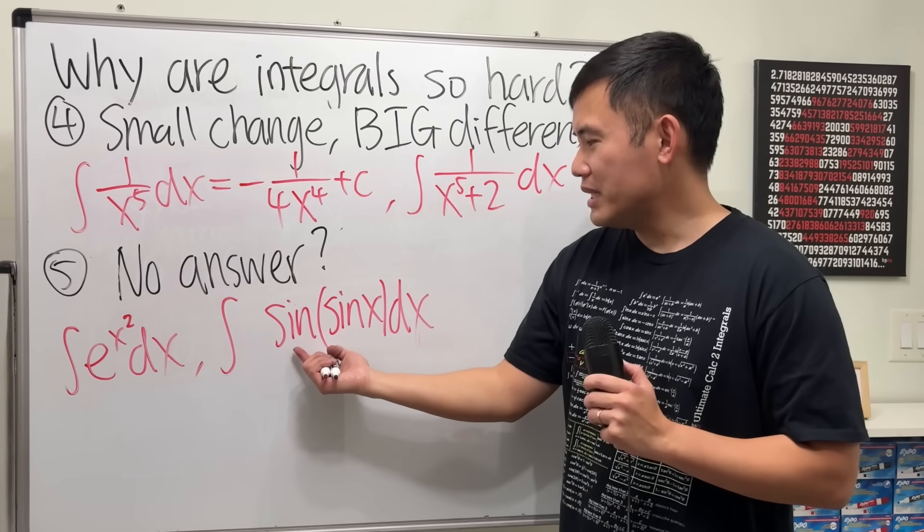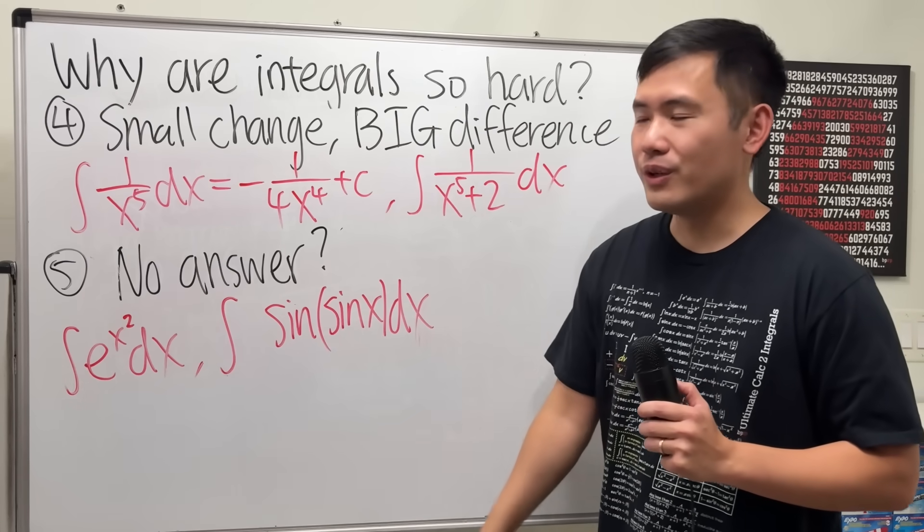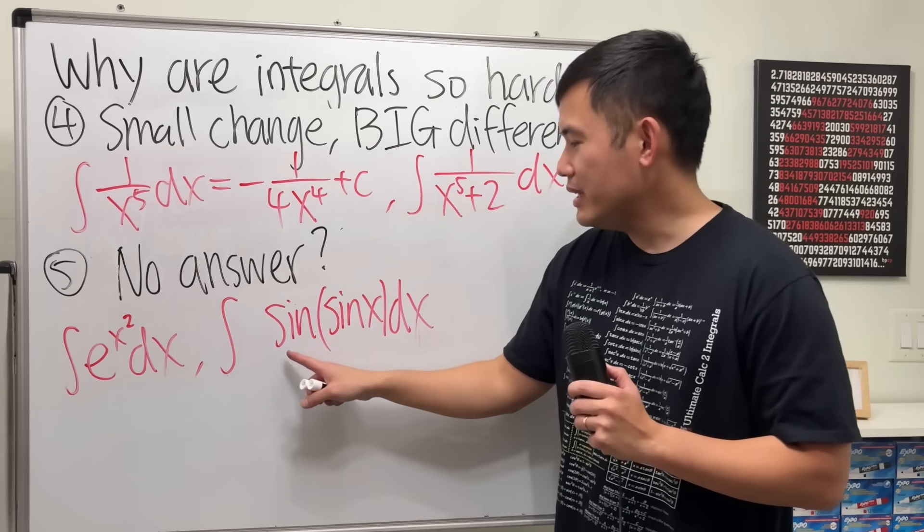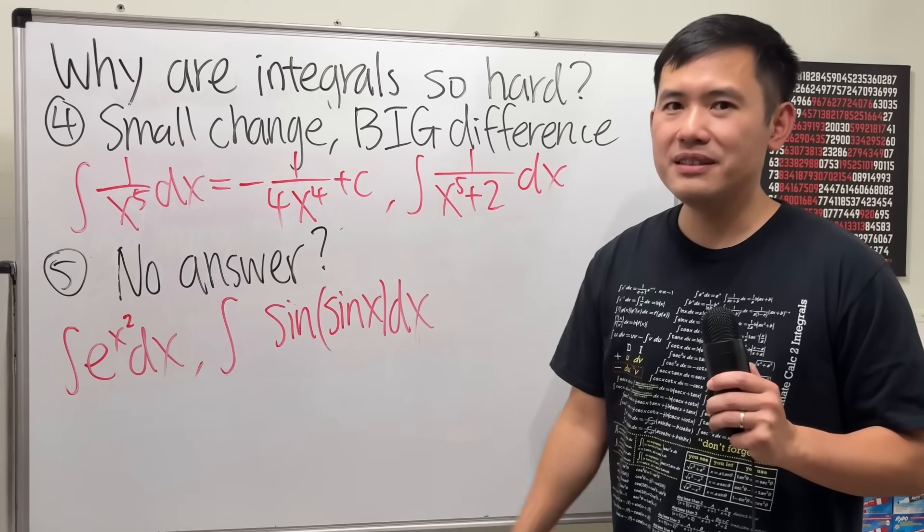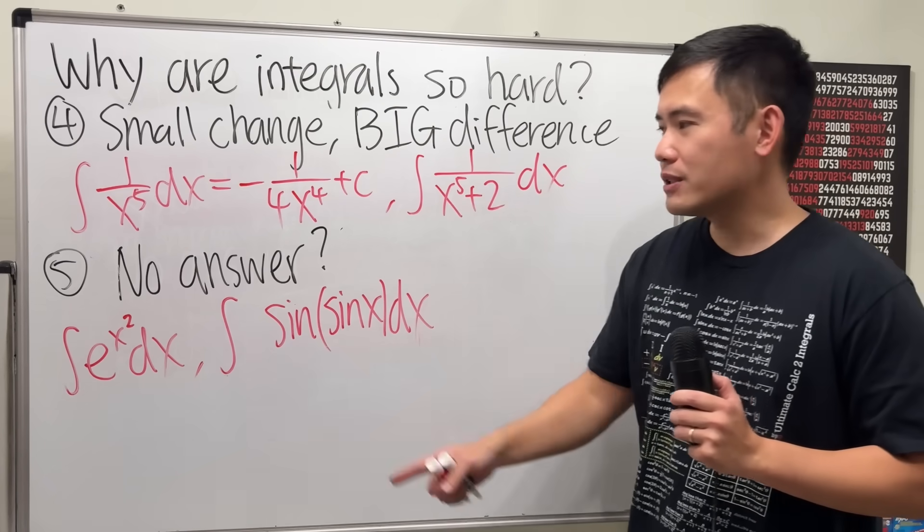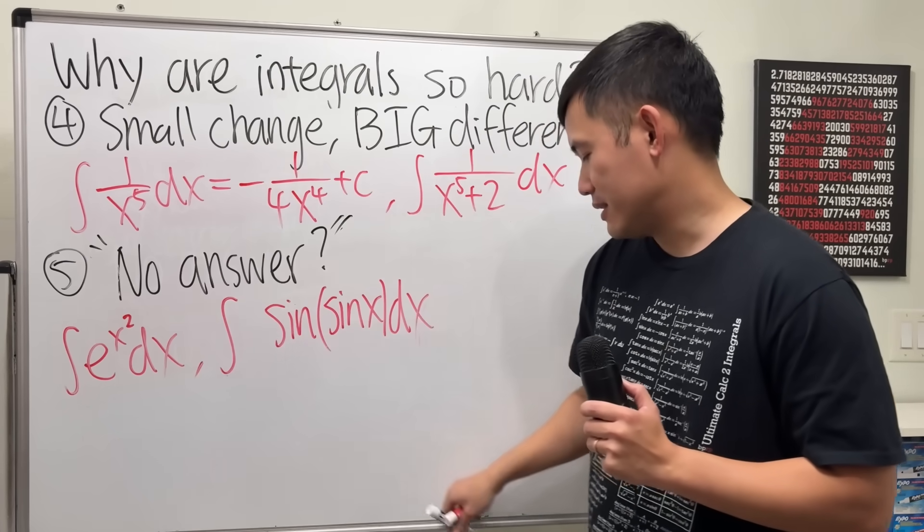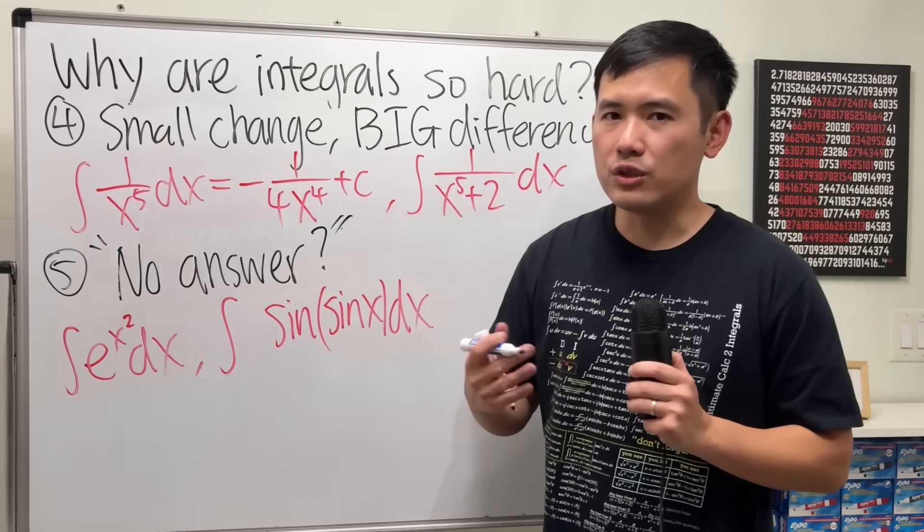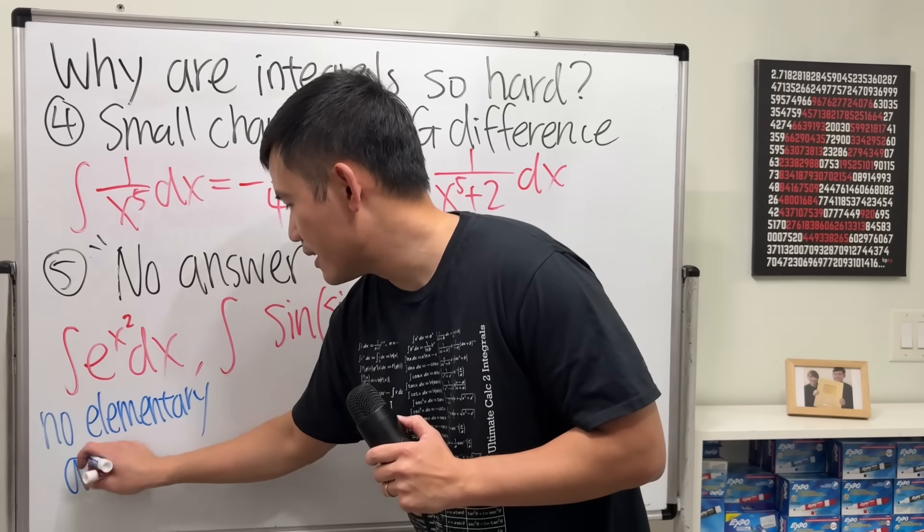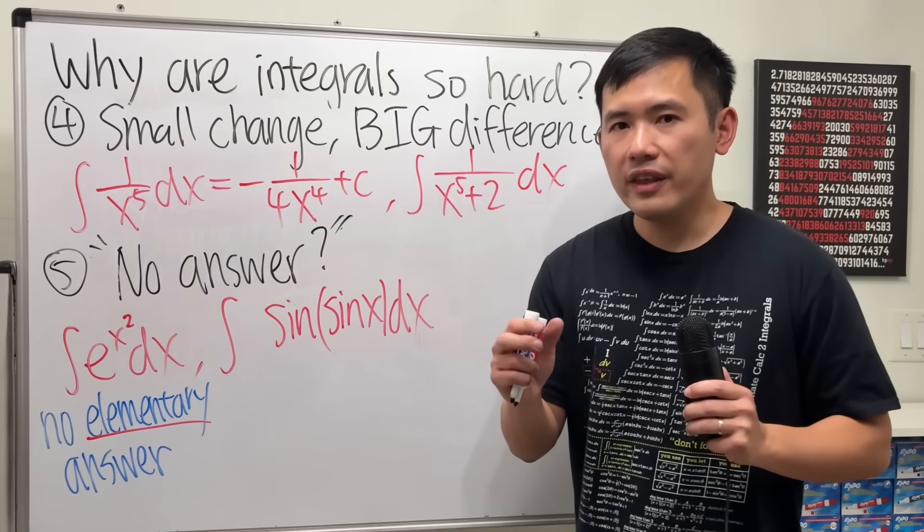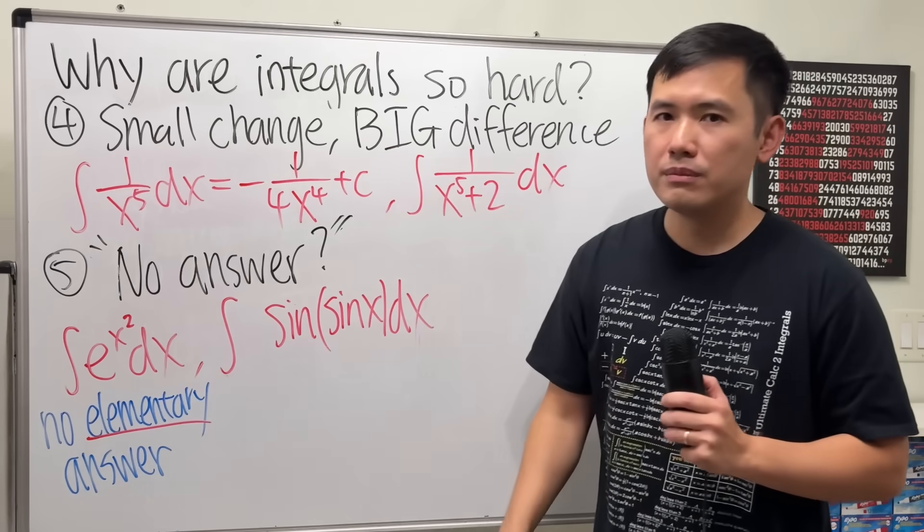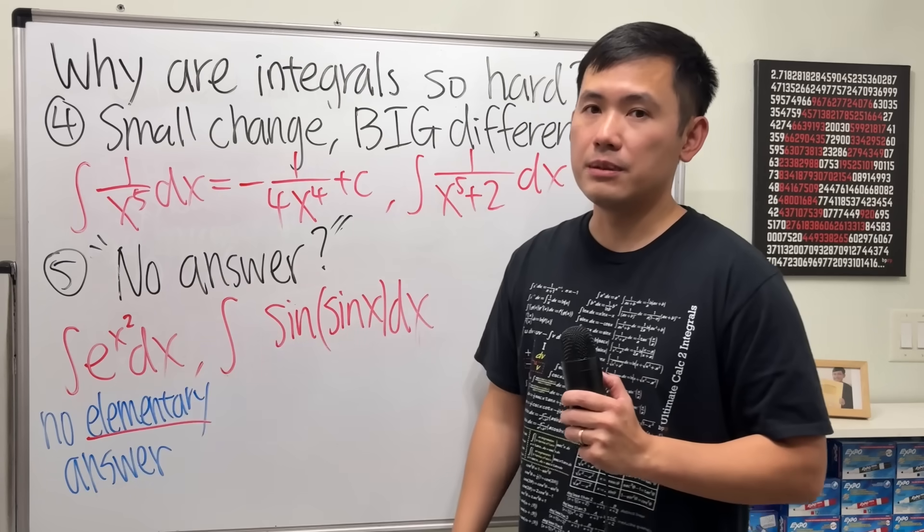Now you might wonder, we can totally differentiate sin of sin of x by using the chain rule. Yes, we can also differentiate e to the x squared by using the chain rule. But if you are trying to integrate this and that, they don't even have answers in the first place. Yeah. In fact, there are also different levels of no answer. Let me explain this now. For this one, if you want to be more sophisticated, you can say it has no elementary answer. What I mean by that is, you cannot think about regular functions that you put together and then differentiate that and you end up with e to the x squared. It's not possible. And it's very hard to prove that that's not possible, by the way.